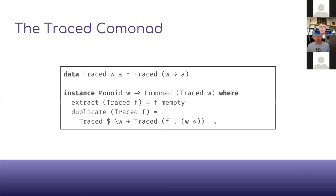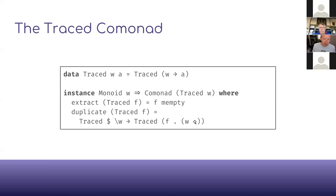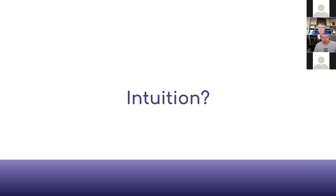Traced is another comonad — just like we have Writer in monads, we have Traced as a comonad. If W is a monoid, then we have a comonad called Traced W. It consists of functions from that monoid into the return type. To extract, you apply that function to the empty monoidal value. To duplicate, you end up with two layers of Traced, and you monoidally append them together.